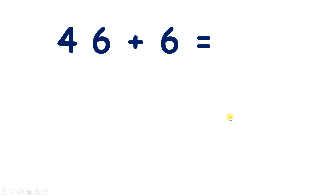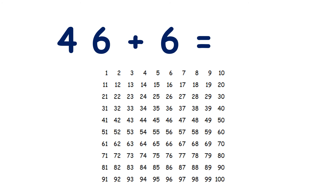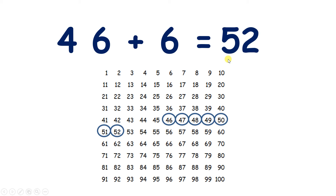Now, 46 add 6. On the 100 square, I can find the number 46, and then I add 1, 2, 3, 4, 5, 6. And that gives me 52.